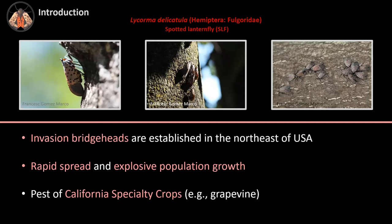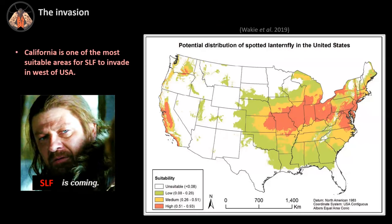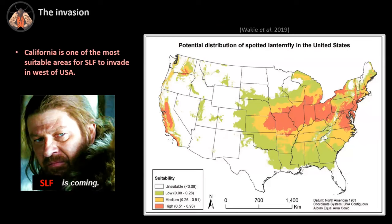Professor Mark Hoddle identified spotted lanternfly as a potential new pest and significant invasion threat to California, because spotted lanternfly invasions are well established in the northeast U.S. This invasive pest has also shown rapid spread and explosive population growth in all infested areas. It is a pest of California specialty crops like grapevines, which is a very important crop here in California.